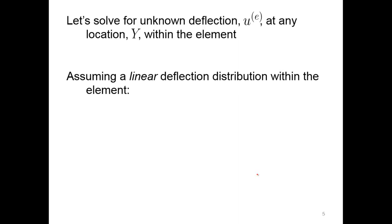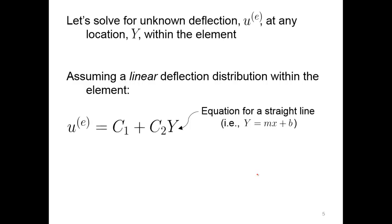Let's solve for some unknown deflection. If we want to figure out what the deflection is between some nodes, we assume a linear deflection distribution — linear is the key word. So it's a straight line, and we have to have the form y = mx + b. In our case, y is the deflection u, x is our y-position within the element, c2 is essentially our slope, and c1 is our y-intercept. So we're maintaining that form.